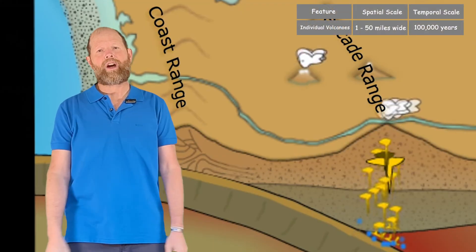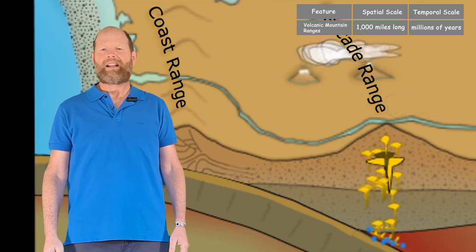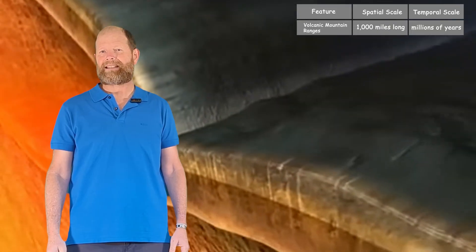If the oceanic crust is subducting under continental crust, we get a volcanic mountain range, like the Cascade Mountains in the Pacific Northwest of the United States.